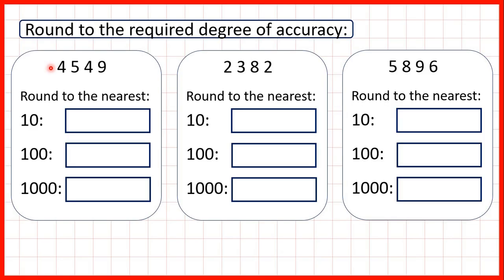We need to round these numbers to the nearest ten, hundred, and thousand. First, we have four thousand, five hundred and forty-nine.